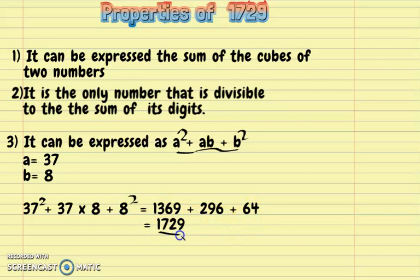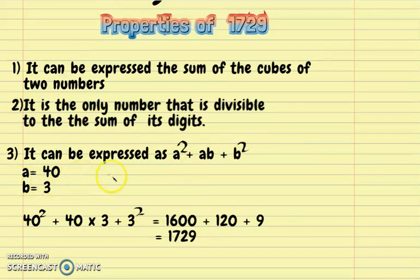The fourth and final way to use this formula: if a = 40 and b = 3, replacing these values gives us 40² + 40×3 + 3², which equals 1600 + 120 + 9 = 1729.